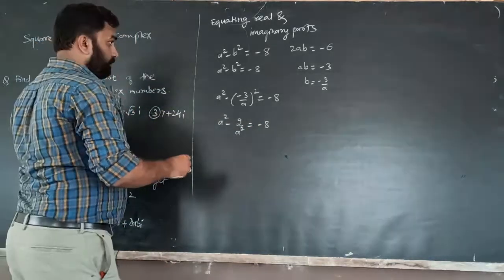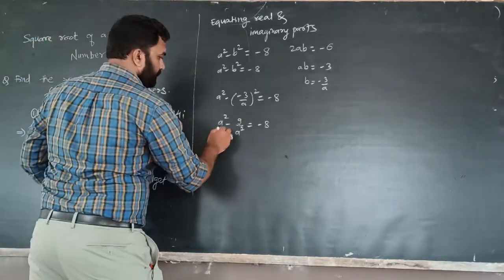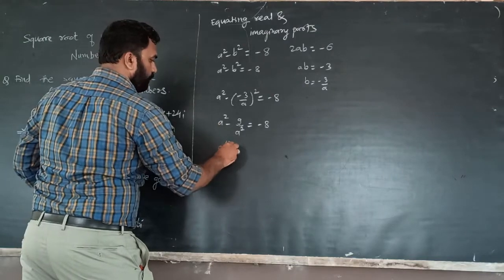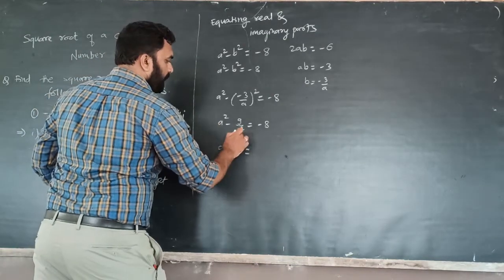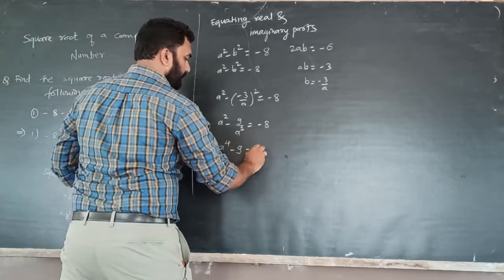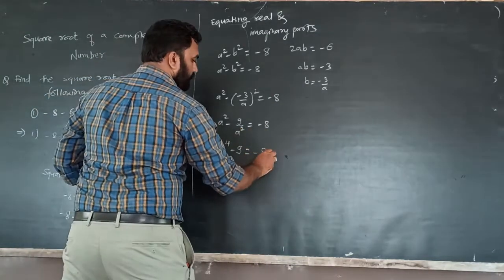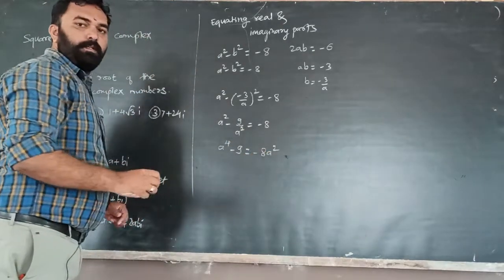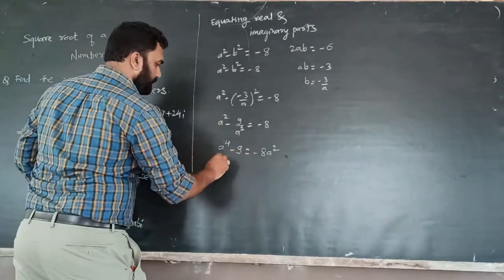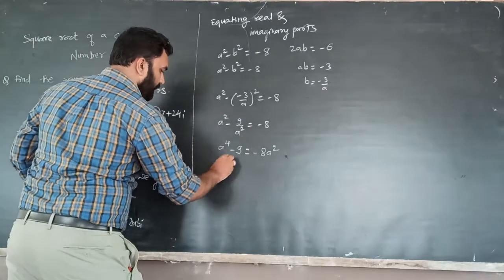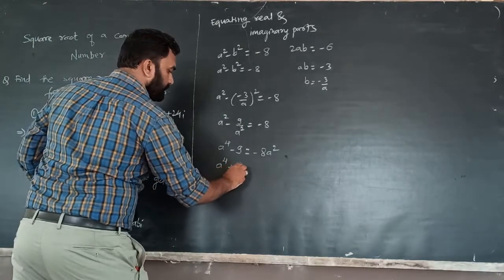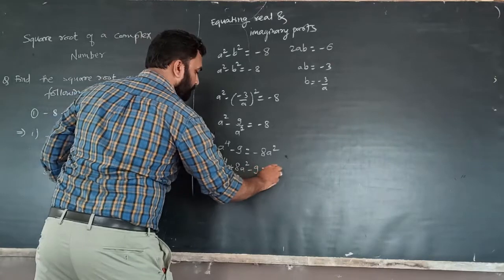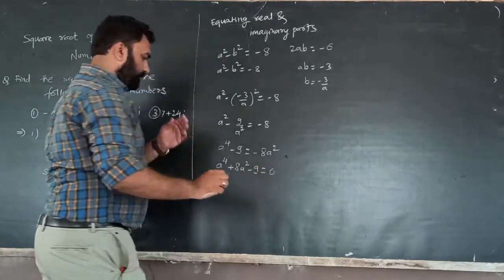Expanding: a squared minus 9 over a squared equals minus 8. Cross-multiplying: a to the 4th minus 9 equals minus 8a squared, giving a to the 4th plus 8a squared minus 9 equals 0.